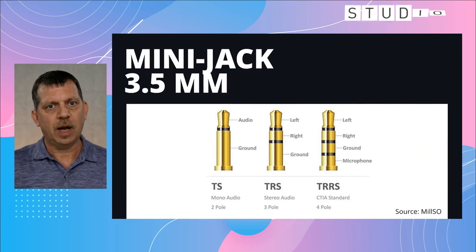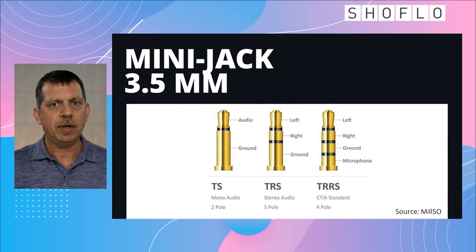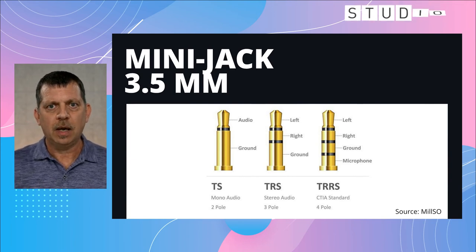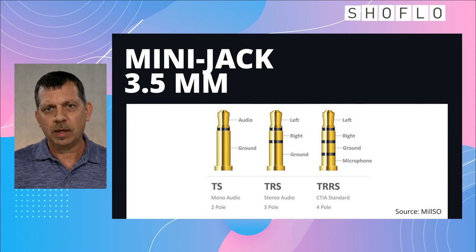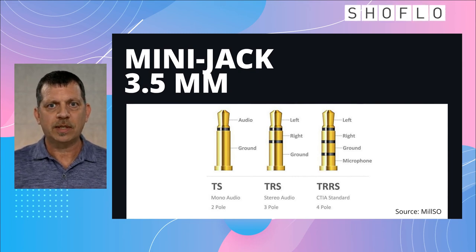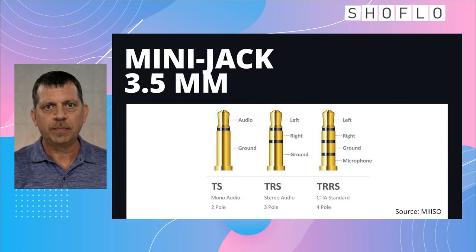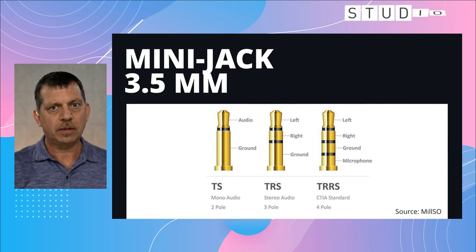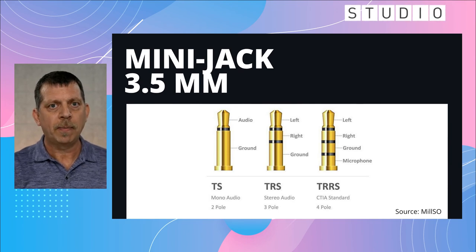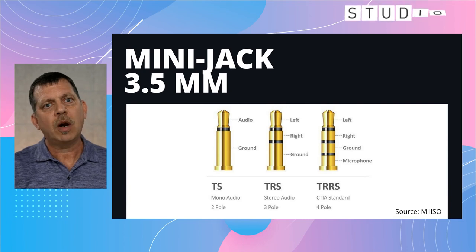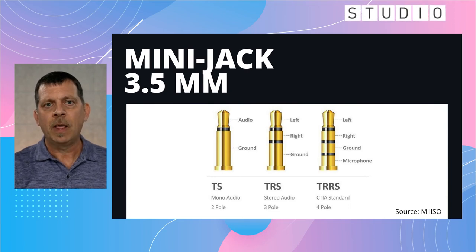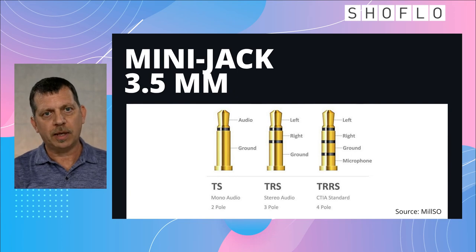Now we're going to talk about microphones by connection type. The first uses an eighth-inch or 3.5 millimeter connector. Other than headphones made for cell phones, these are generally not very common today and historically have not been the best quality. If you choose to use one of these, make sure your computer's input is designed to accept a TRRS, or tip ring ring sleeve, connection. There are three main types: TS (tip sleeve), typically for microphone-only; TRS (tip ring sleeve), typically for stereo audio; and TRRS (tip ring ring sleeve), used for stereo audio and a microphone together. Not all computers will accept a TRRS connection even though you can plug it in, so check your specs.